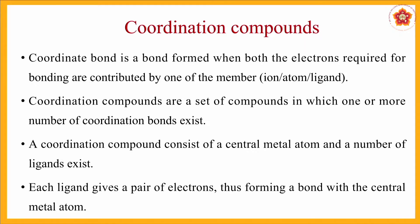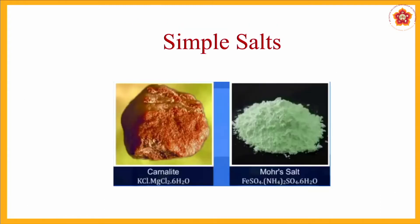A ligand is a system which can give electrons to the central metal ion. Let us look at some examples of simple salts: carnelite and Mohr salt, which we also come across in laboratory titrations.